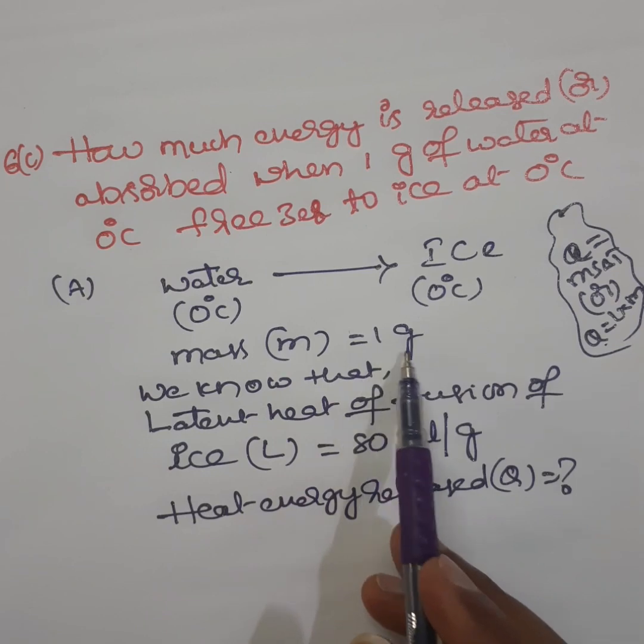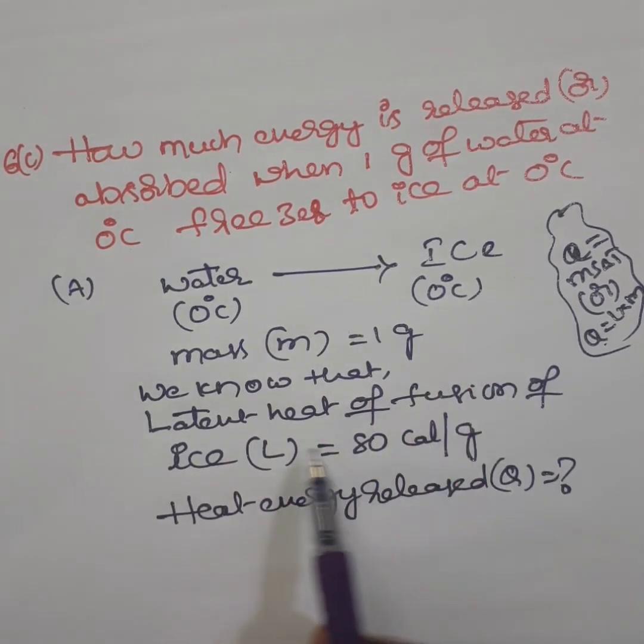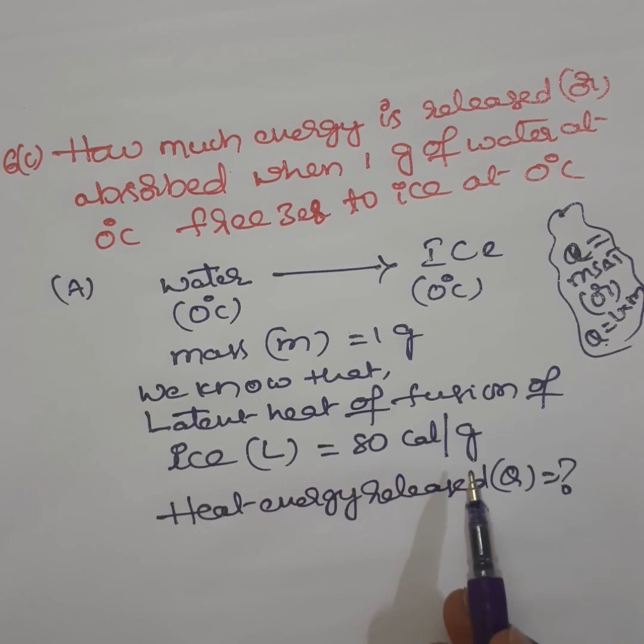Mass is given as 1 gram. Water changes into solid ice, that is why latent heat of fusion of ice is 80 calorie per gram. Heat energy released Q is question mark.